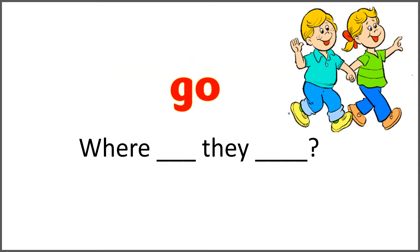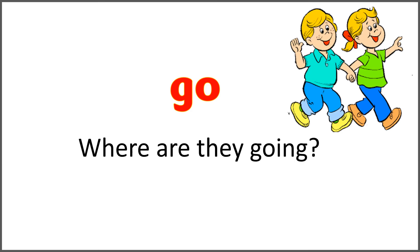The given word is 'go,' and the sentence is 'where blank they blank?' Use the correct form of 'go' with 'are' to ask this question. And the correct answer is: where are they going? They are looking very happy. They are walking together. They are smiling. Where are they going?